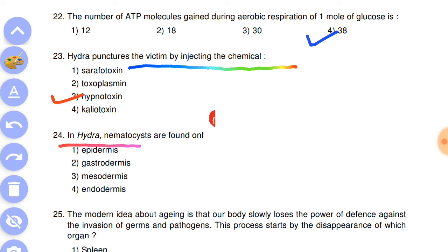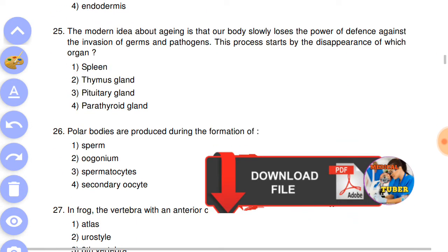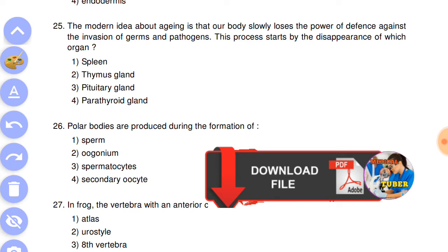Next question: in Hydra, nematocysts are found only - answer is the first, epidermis. Question number 25: the modern idea about aging is that our body slowly loses the power of defense against the invasion of germs and pathogens. This process starts by the disappearance of which organ? Answer is the second, thymus gland.